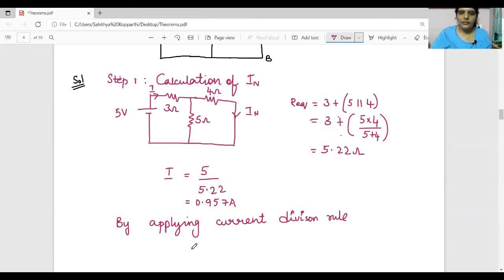IN is nothing but total current into other branch resistance divided by total resistance. So total current is 0.957 ampere, now 0.957 into 5 divided by 5 plus 4.